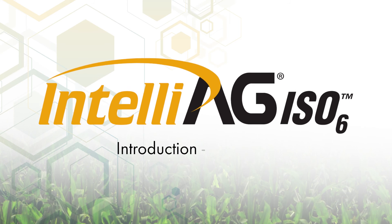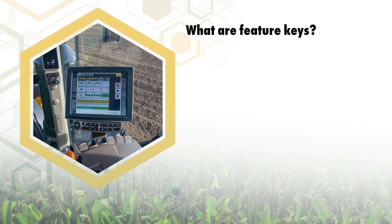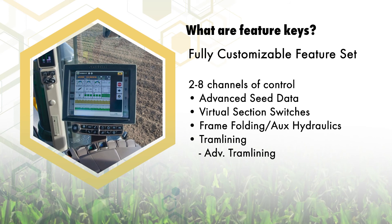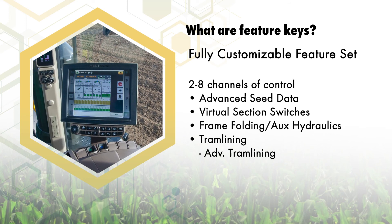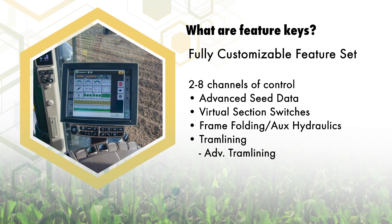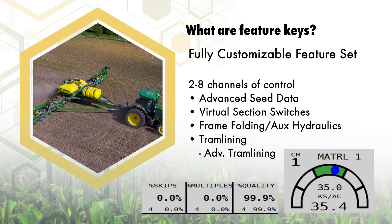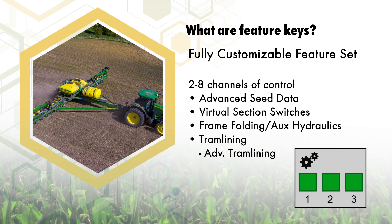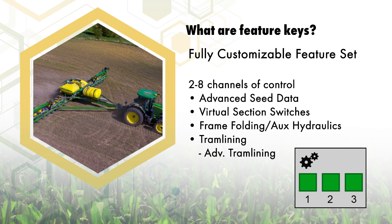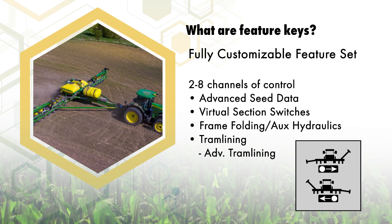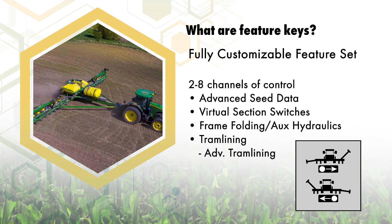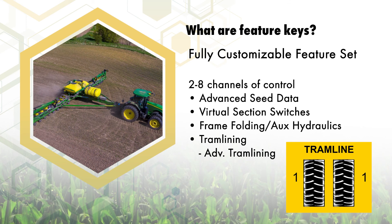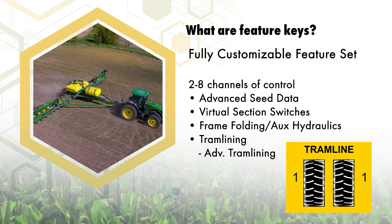ISO 6 offers a number of built-in features that can be tailored to each module to ensure you are only purchasing features needed to fit the specific application. Some feature keys may require additional hardware to fully utilize them. Common feature keys include advanced seed data including seed quality, virtual switches for manual section control activation, frame folding control to integrate folding into one terminal, and advanced tram lining for calculating and activating specific row shutoffs as seen in most European operations.